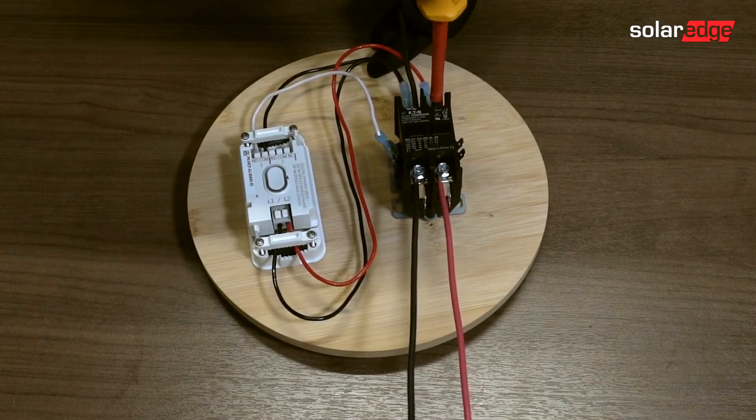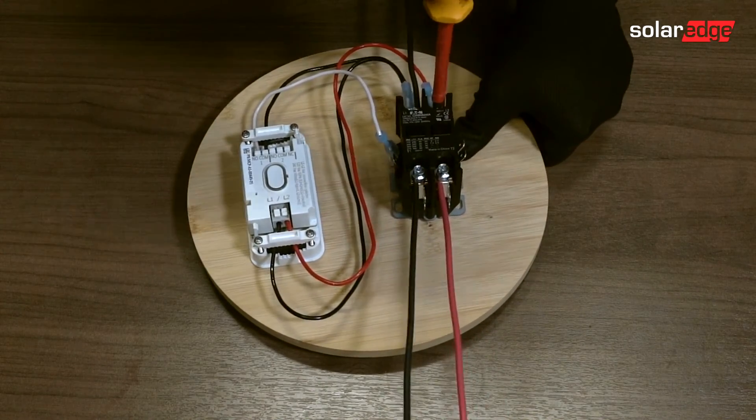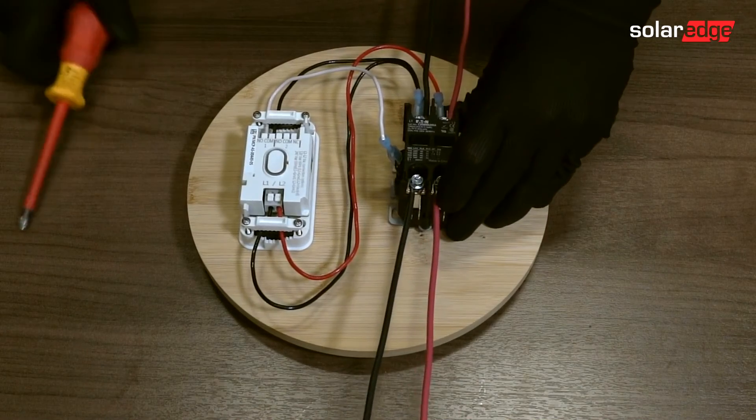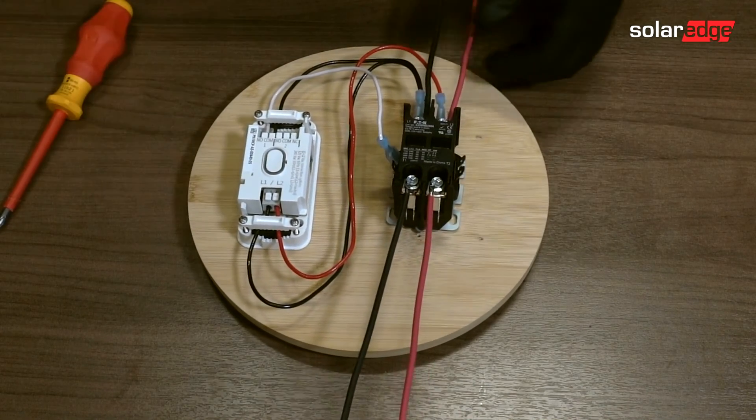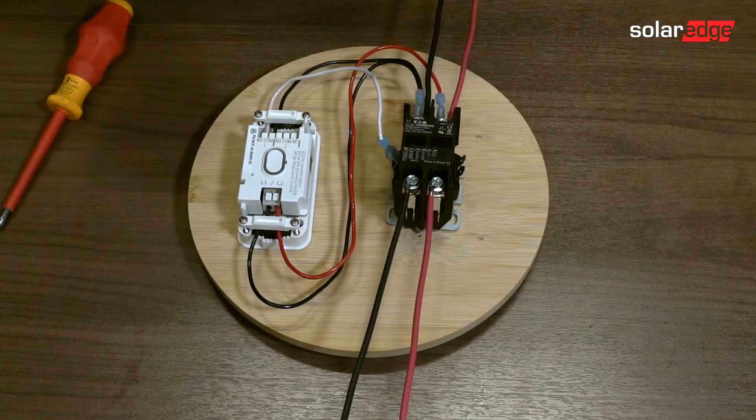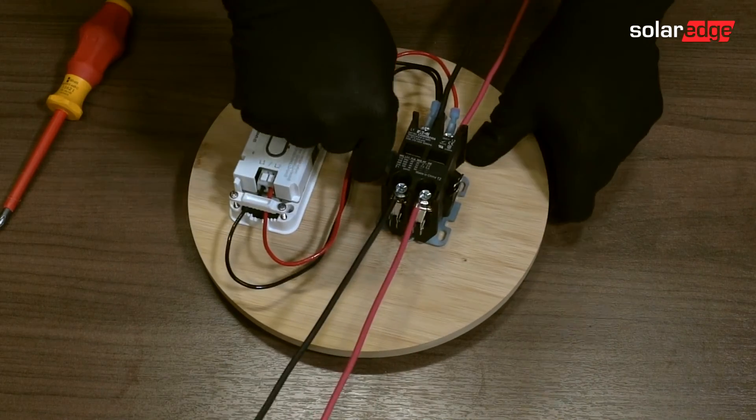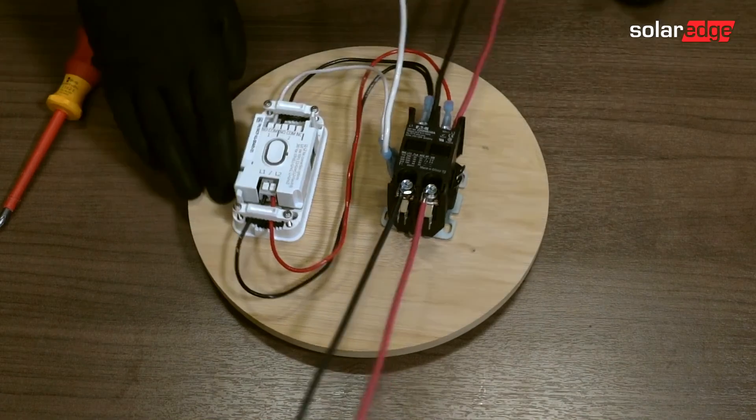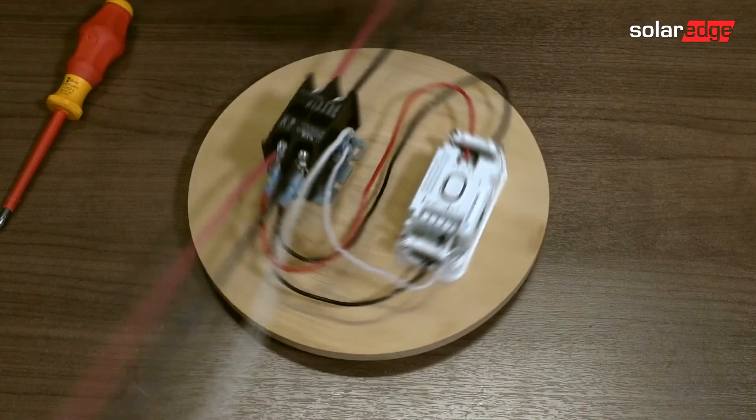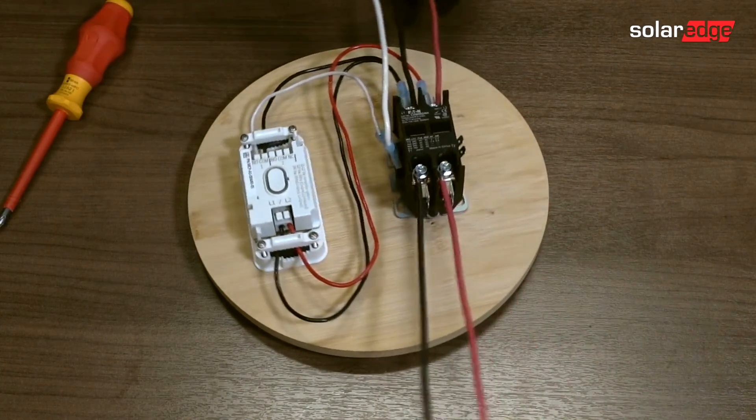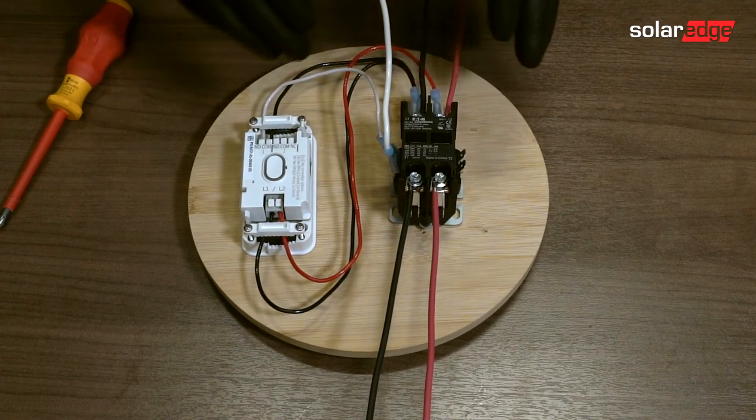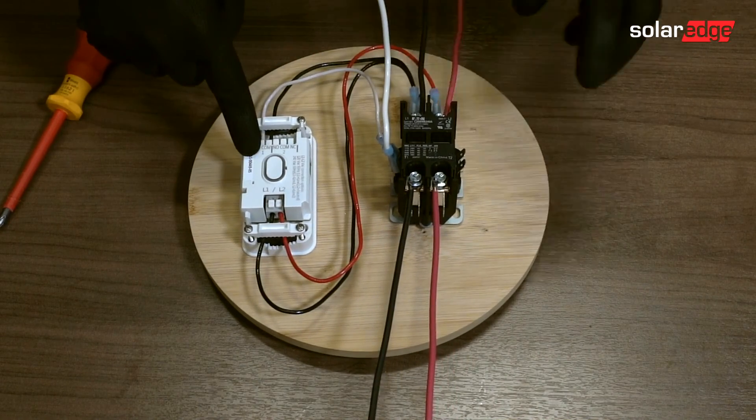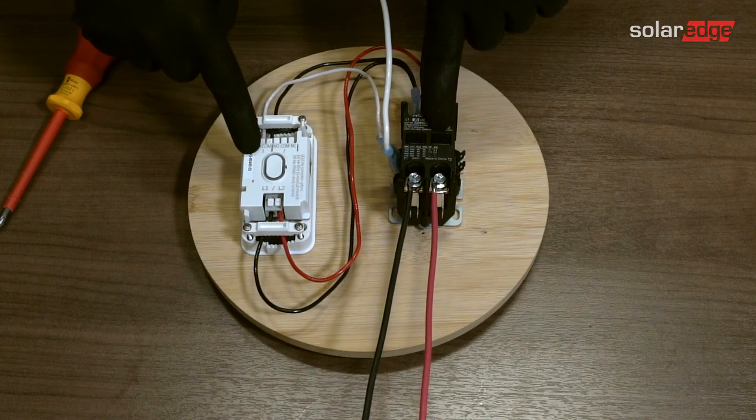Alright, I gave myself a nice little wire loop so I could really torque down on those conductors. And then the last one is going to be from the neutral bar to the coil. So I have a 120 volts coil. And that is how you wire a SolarEdge load controller to a contactor with a 120 volt coil.